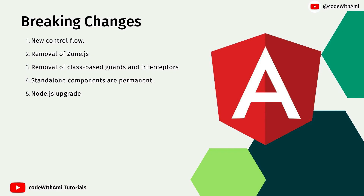Standalone components are now permanent. We have been talking about standalone APIs since the Angular 14 release. Now standalone APIs are permanent, and the default app you create using the Angular CLI will be module-less. For people who are still attached to modules and wanted to keep a modular design pattern, that's bad news — whenever you create a new application, you will have to deal with this, and if you want to add modules, you will have to add them manually.